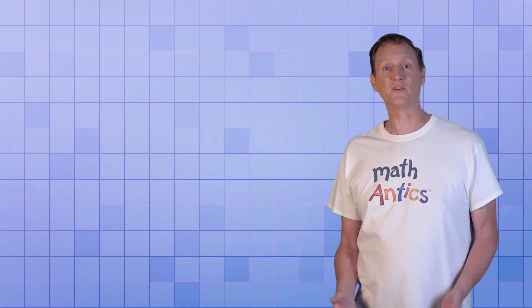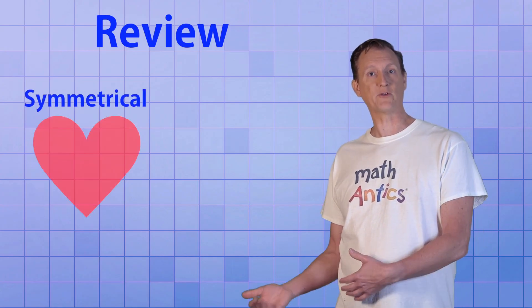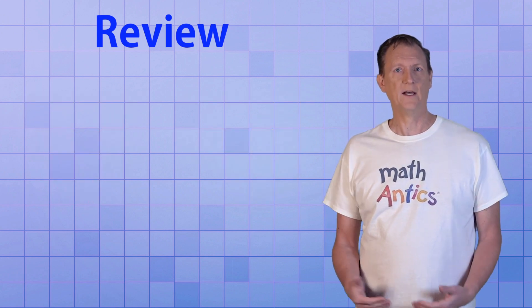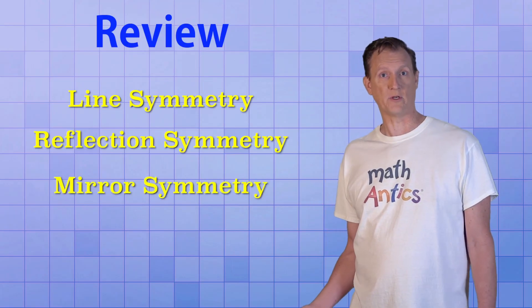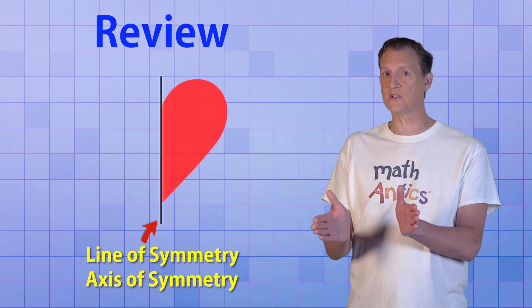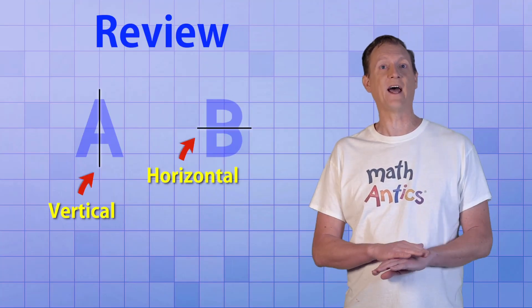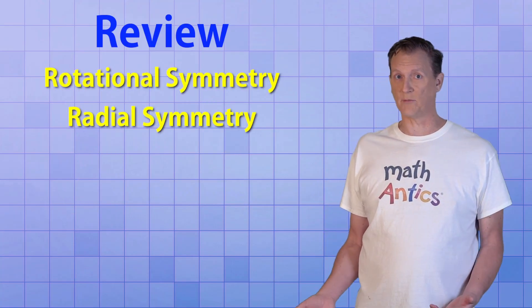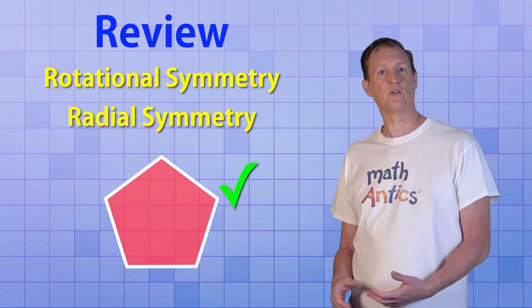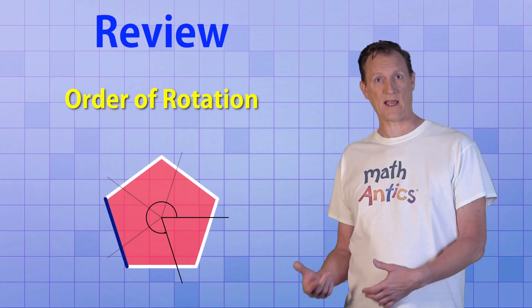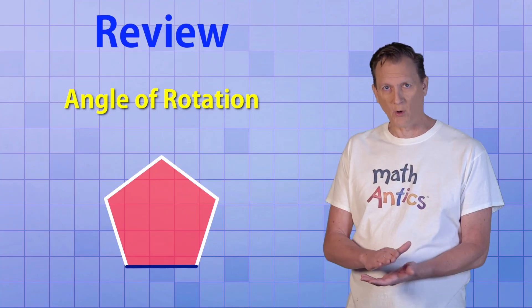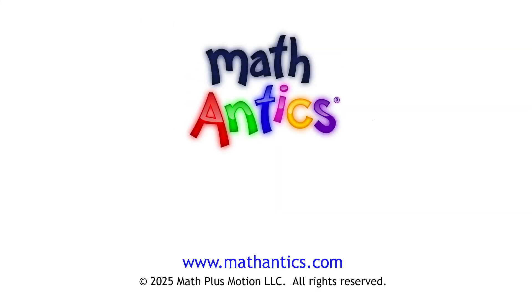Alright, let's review what we've learned. An image with symmetry is called symmetrical; without symmetry, asymmetrical. Line symmetry is also called reflection symmetry or mirror symmetry. The line of symmetry, or axis of symmetry, is the line along which you fold a symmetrical image so both halves match. A vertical line of symmetry is straight up and down; a horizontal line of symmetry is flat like the horizon. Rotational symmetry means a shape can be rotated a certain amount and match the unrotated shape. The order of rotation is how many times a shape matches in a complete rotation, and the angle of rotation is the smallest angle needed. I hope that helps — thanks for watching Math Antics, and I'll see you next time!